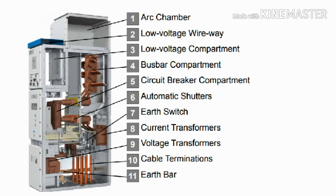Eleventh is the earth bar, located at the bottom of the switchgear panel. It connects the body of the switchgear, and the earth switch along with all other earth connections are connected here.